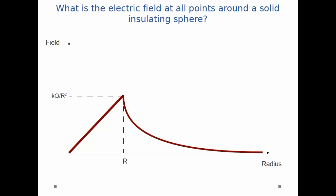And then, just like a point charge, just like a conducting sphere, it drops off as 1 over r squared. That's where we see the kQ over little r squared outside the sphere.